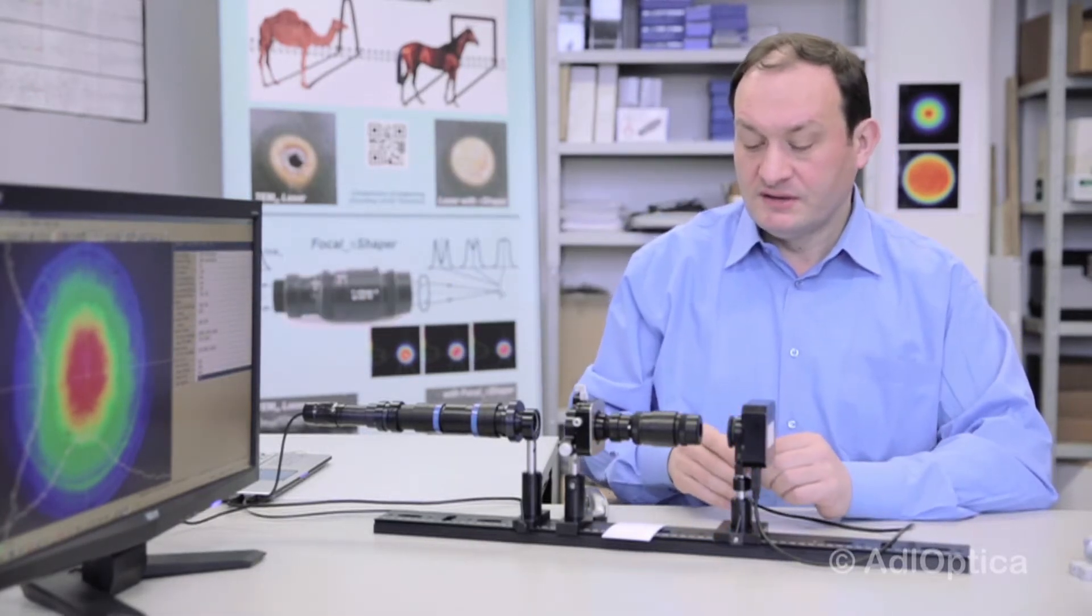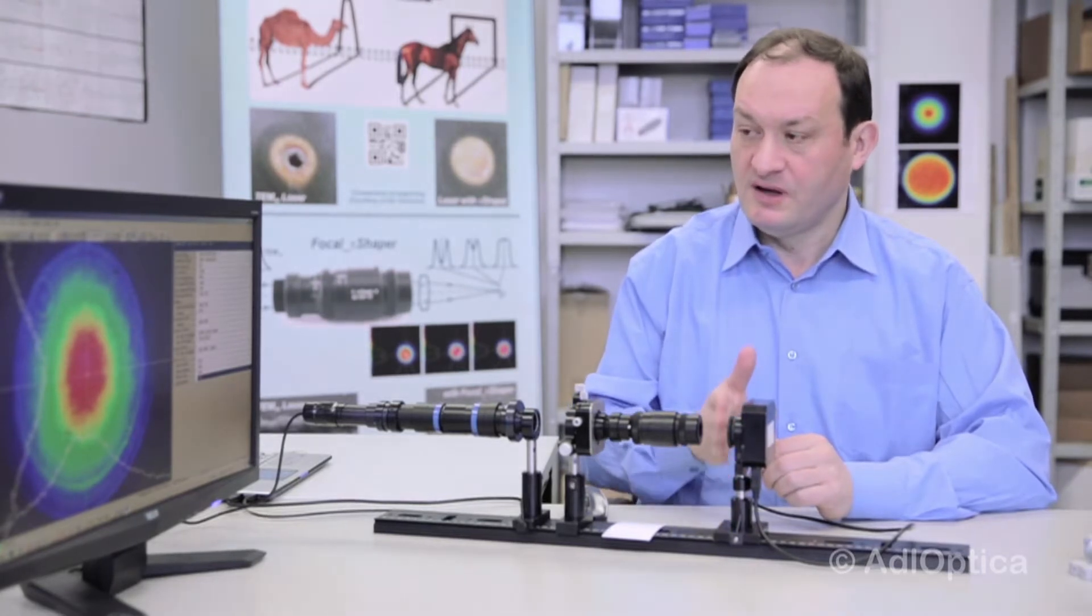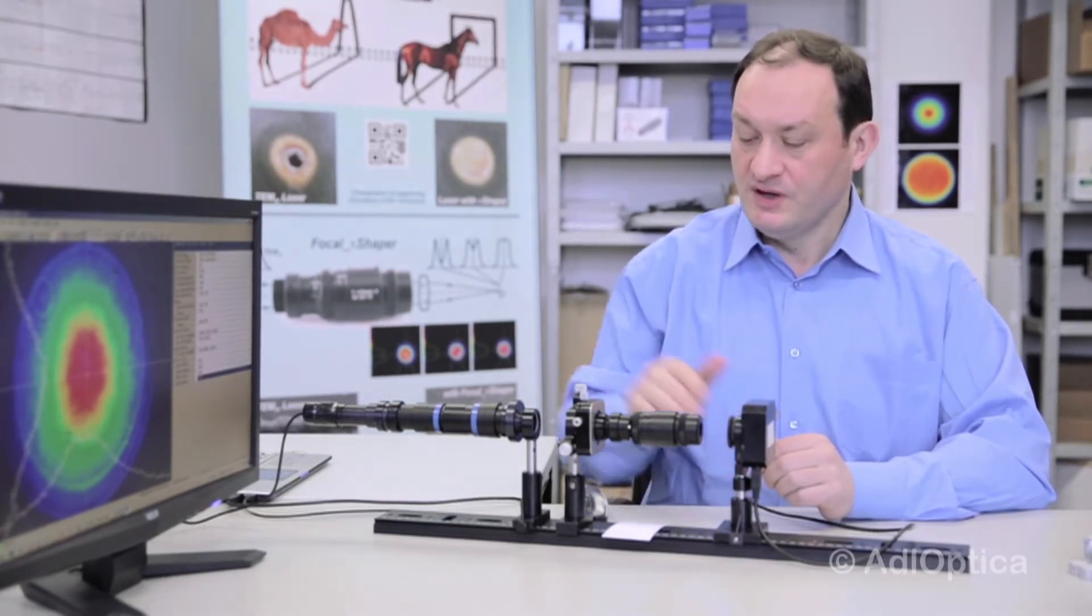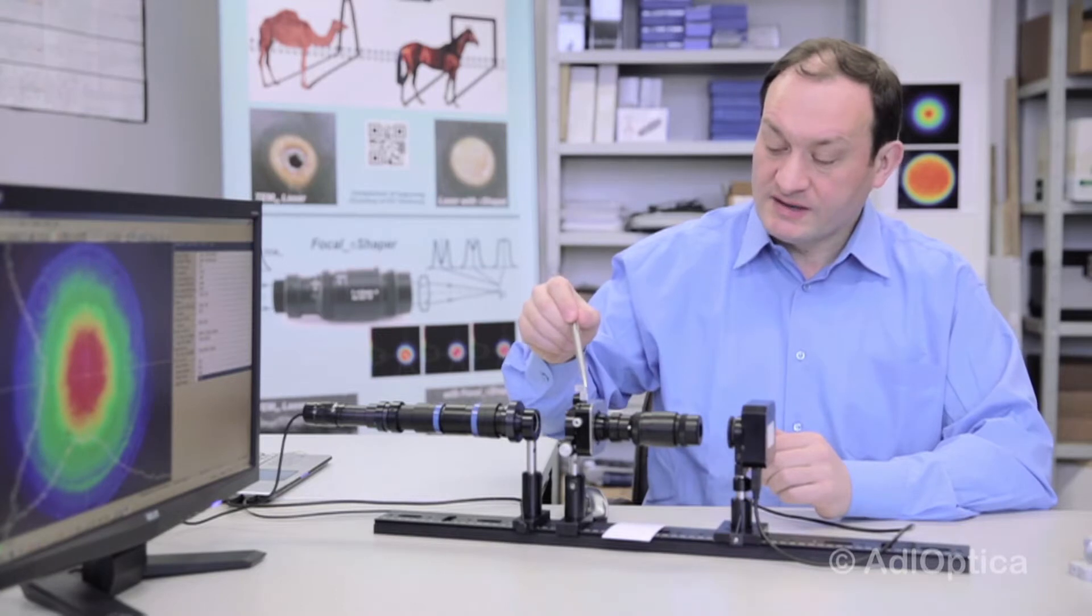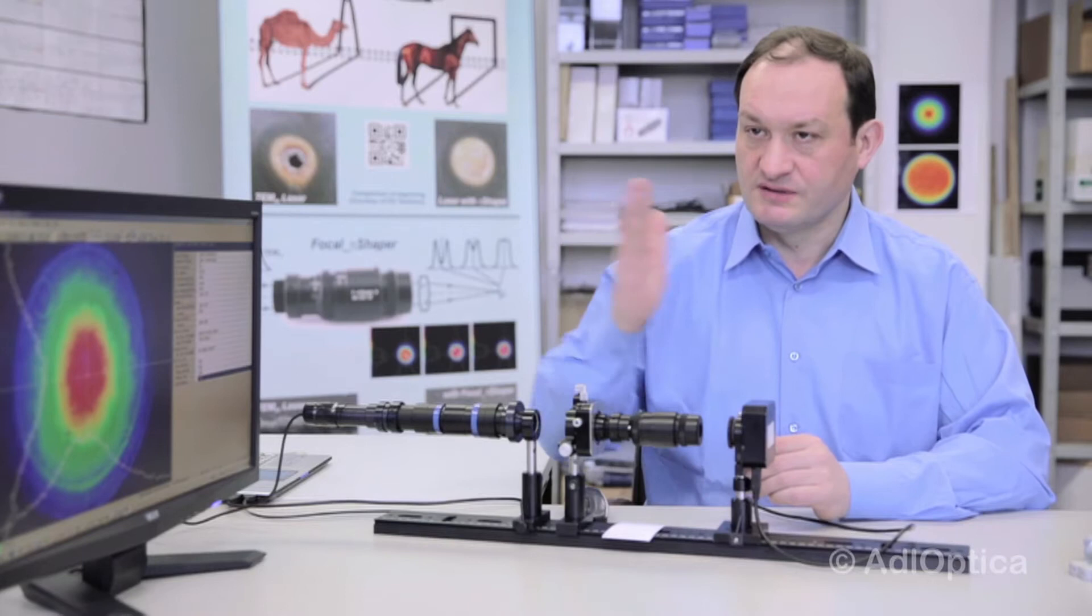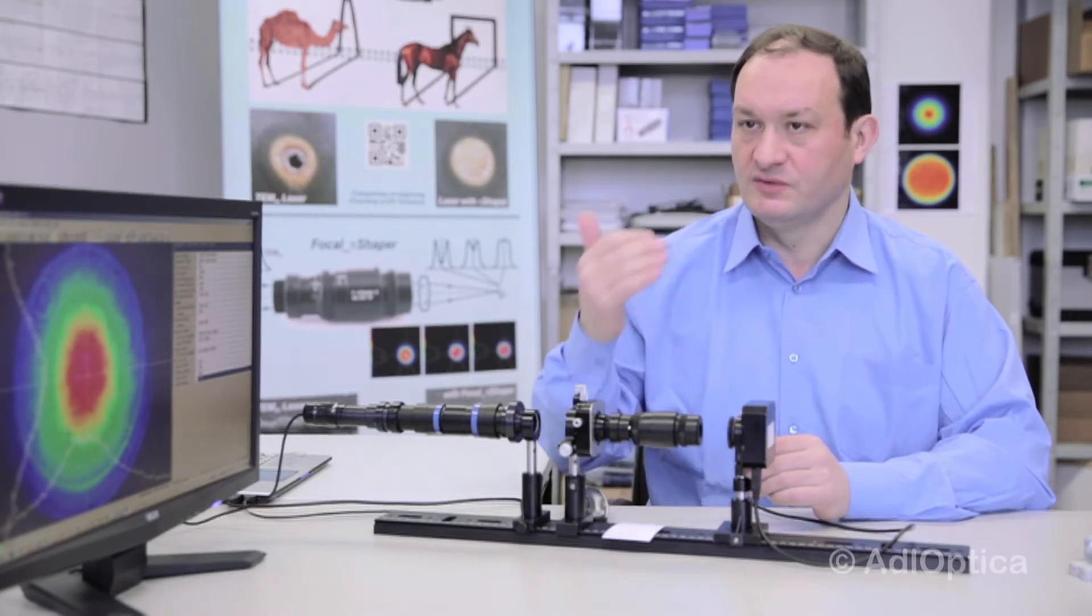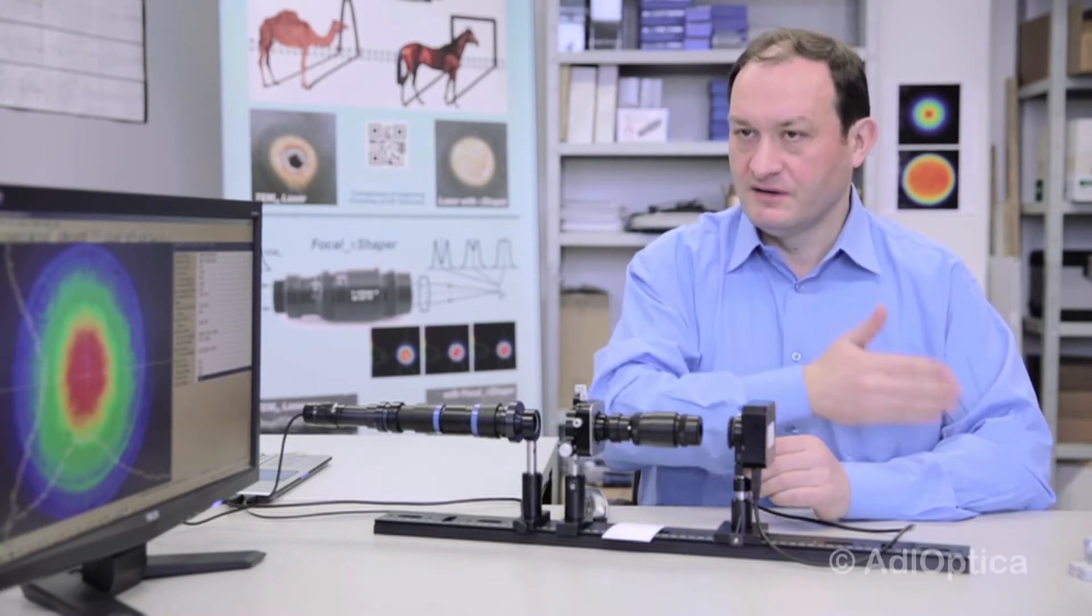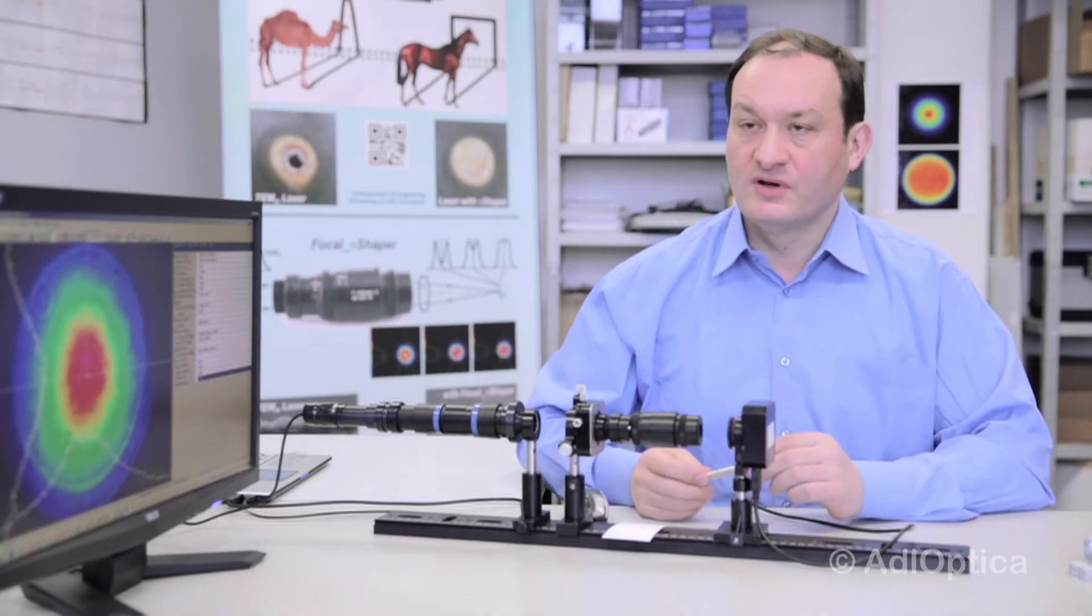And when we take the profile right after the beam shaper, we can use again only X and Y alignment. So only X and Y, no tilts, because tilts will be corrected and will be checked and corrected when we work in the focal plane of the lens.